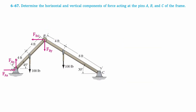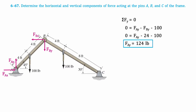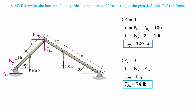Moving back to member AB, we will follow the same process. Taking the sum of vertical forces gives that Ay equals 124 pounds. Taking the sum of horizontal forces gives that Ax equals Bx, which is 74 pounds, and there you have it.